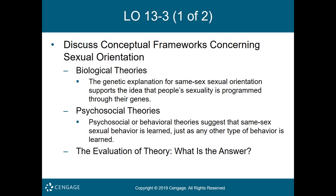Learning objective three is to discuss conceptual frameworks concerning sexual orientation. Biological theories attempting to explain same-sex sexual orientation can be clustered under three headings: genetic, anatomical — which includes the brain — and hormonal. These theories are based on the idea that same-sex sexual orientation is caused by physiological factors over which individuals have no control.